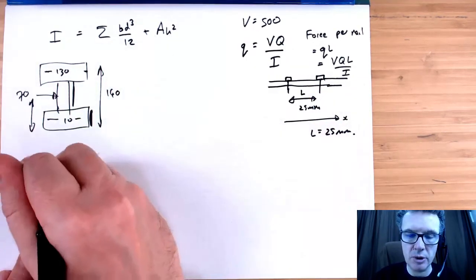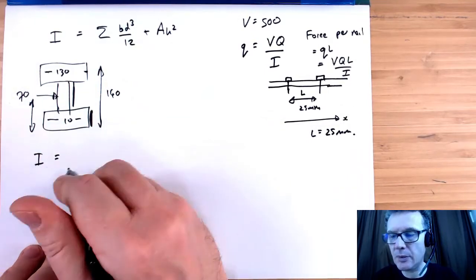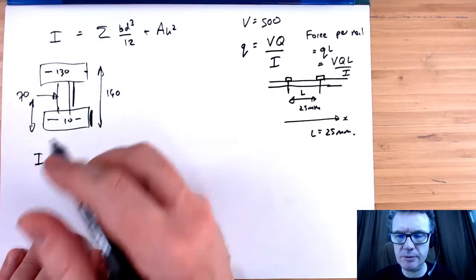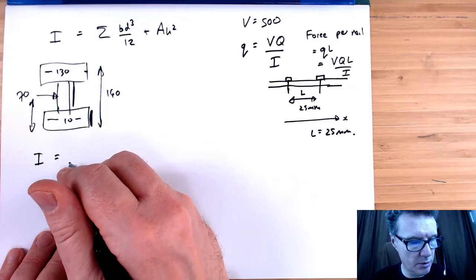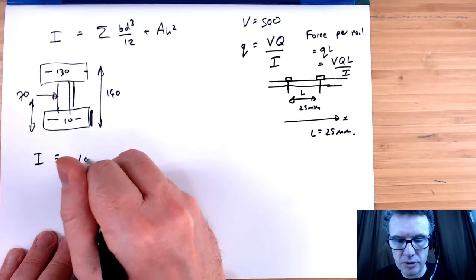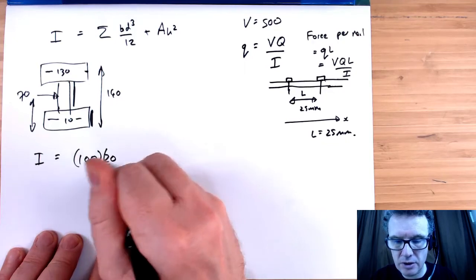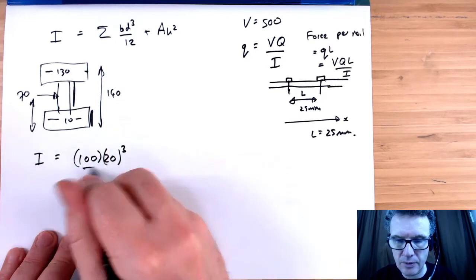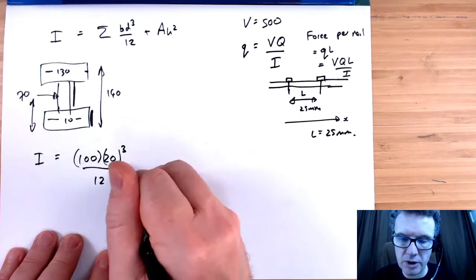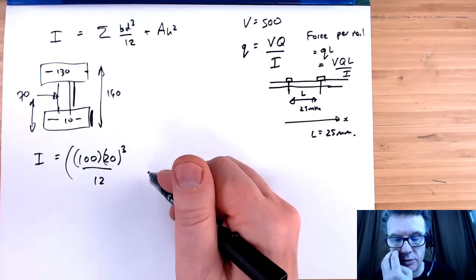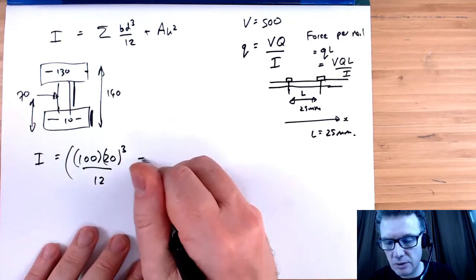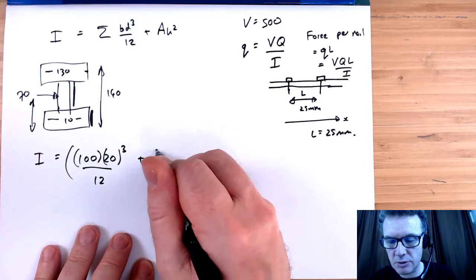Things are symmetric, so I can really just be a bit naughty and maybe just look at the top section and the middle section, double my top section to find my I. So my I is going to be, I'm working in millimeters, and we've got a breadth of 100, depth of 20, over 12.